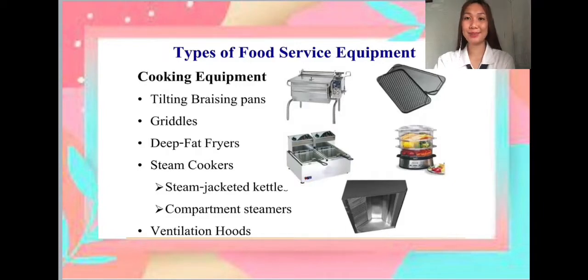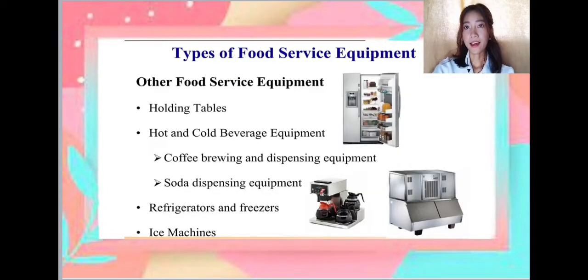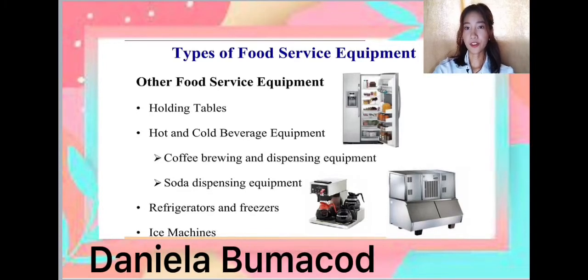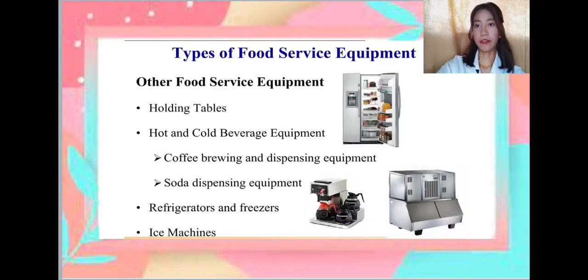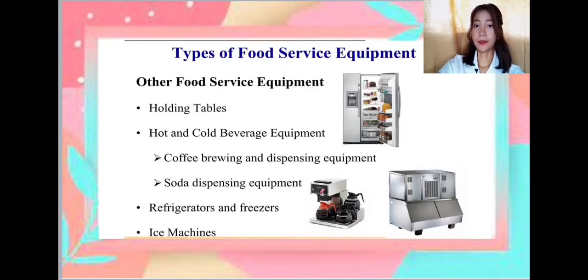That's all for my report. The next presenter will be Daniela Bumakod. Good day everyone, I am Daniela Bumakod. Holding tables are small tables that you can place in a small area in the kitchen. Next is hot and cold beverage equipment. There are two types: number one is coffee brewing and dispensing equipment, which includes coffee brewers and grinders, cocoa cappuccino dispensing machines, and similar machines. Soda dispensing equipment is an apparatus with a delivery tube and faucet for dispensing soda water, and the counter for preparation and serving of sodas, sundaes, and ice cream.